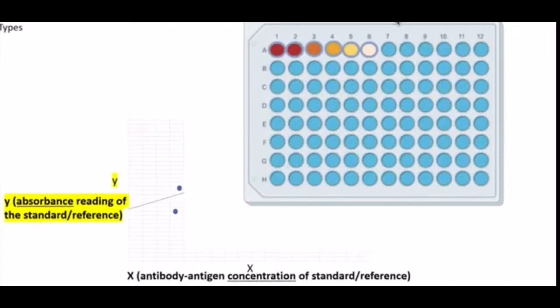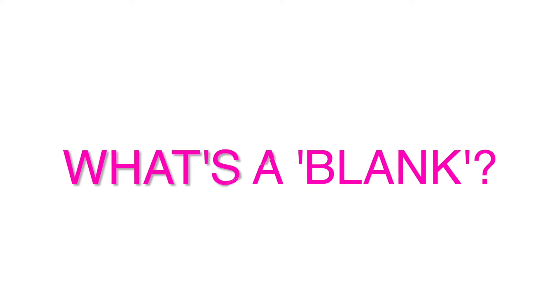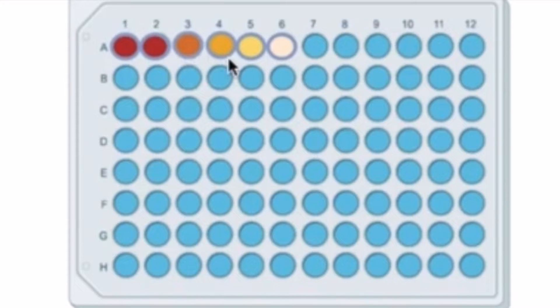A practical example for determining the limit of detection is to take, say, ten reagent blanks, so the blanks that have the same solvent as what your analyte would be dissolved in—not just water but something that replicates exactly the conditions, the buffers that your analyte would be in.